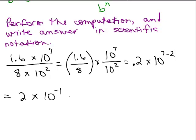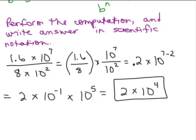We would write that as 2 times, you'd have to move it one place to the left, 10^(-1). So 0.2 is 2 times 10^(-1). This number is 10^5, so we're almost there. 2 times 10^(-1) times 10^5, we add exponents: -1 plus 5 is 4.